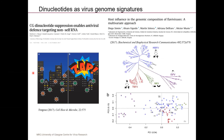To give another example with flaviviruses: flaviviruses are well known for infecting animals through invertebrate vectors like mosquitoes or ticks, but some flaviviruses only infect invertebrate hosts. If you do a PCA on the dinucleotide compositions of these flaviviruses, you see that the invertebrate-only infecting viruses cluster on their own, and that correlates with their CpG composition.